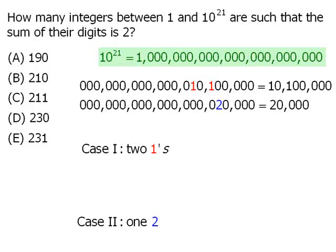Let's examine case 1. How many 21 digit numbers are such that we have two ones and 19 zeros? Well, we have 21 spaces all together and we need to choose two of them to place our two ones. Once we do that, we'll fill up the remaining spaces with zeros.